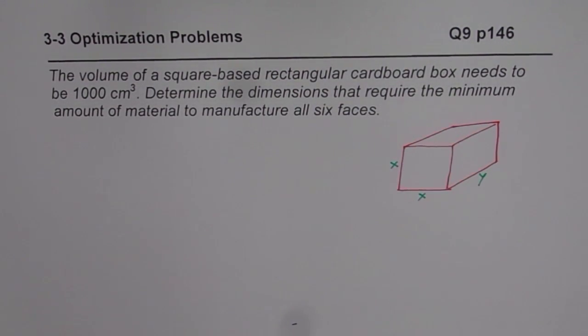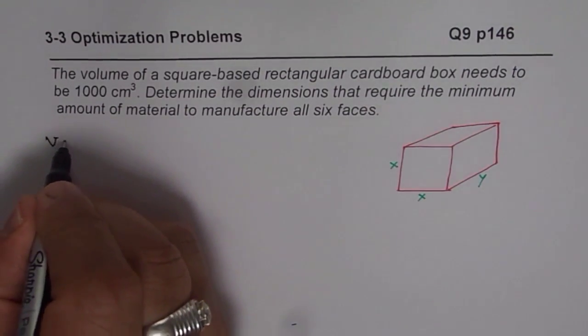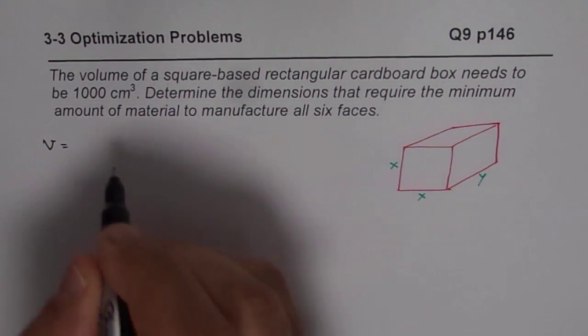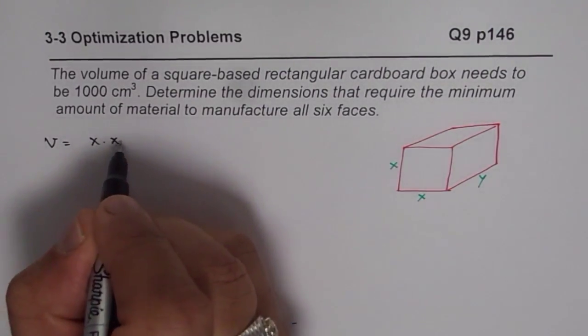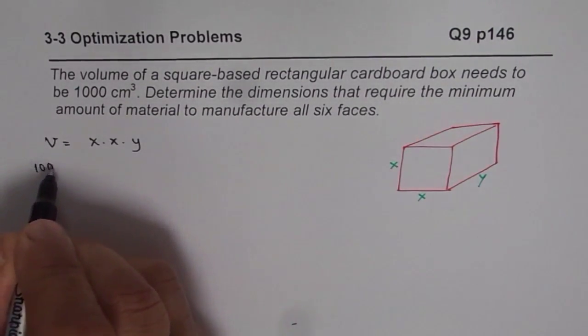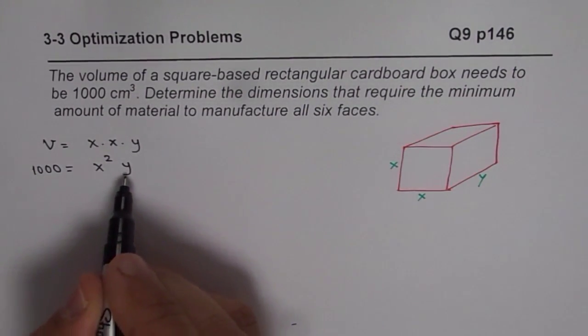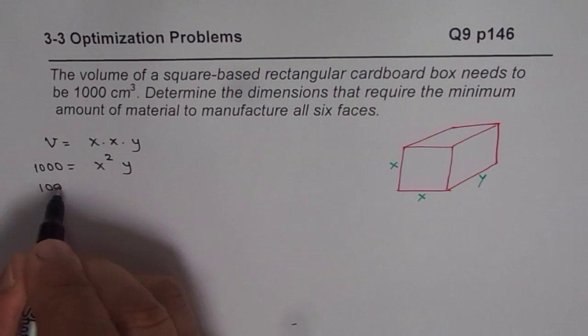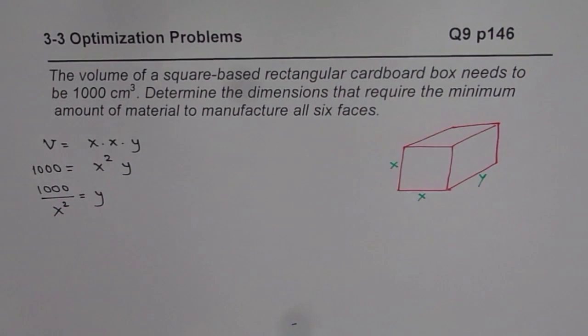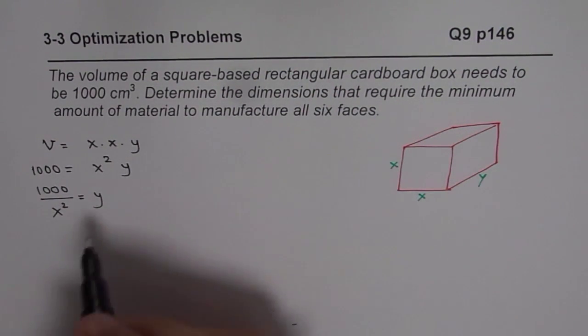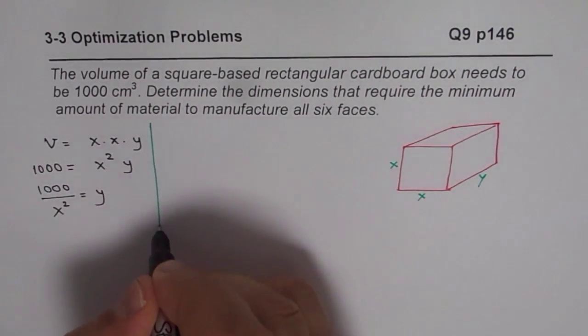In this particular situation, what we are given is that the volume is 1000 cm³. So volume is length times width times height, which is x times x times y, which is 1000. So 1000 equals x² y. From here, we can say 1000 divided by x² is y. First step always is to define your variables and relate them, one in terms of another.